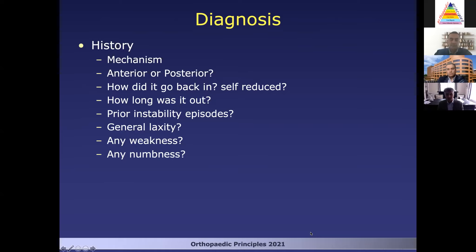Did the patient have any prior instability episodes? That's going to significantly impact decision-making about whether we start talking about surgery right away. Do they have generalized laxity? If so, this may not have been a high mechanism of injury — it may have been a low mechanism, but this is really a multidirectional instability with a little bit of an injury. Do they have any weakness in the shoulder? This will be important to assess whether or not there's a rotator cuff injury, especially in patients over 40. And you want to make sure there's no neurological injury — the longer the patient has been sitting out with their shoulder dislocated, the more you have to think about a brachial plexus injury, and in particular an axillary nerve injury. Any numbness in their arm would also clue you in to neurological injury.